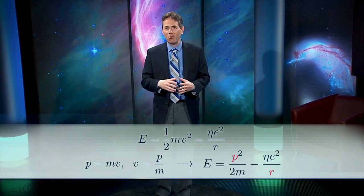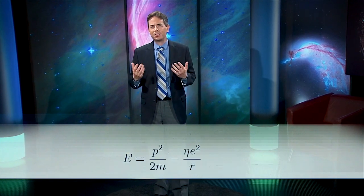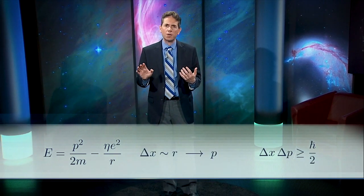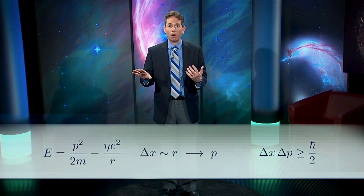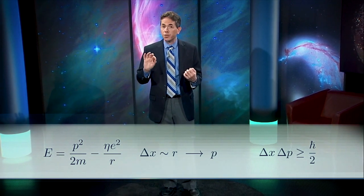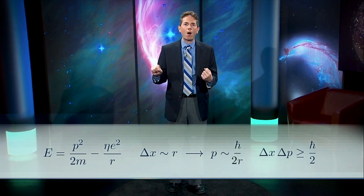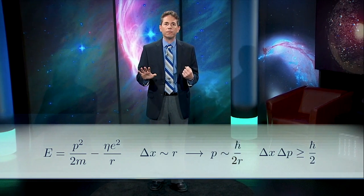Professor Heisenberg won't let us. If the cloud has a radius of r, the uncertainty in the electron's position is on the order of r, which means the uncertainty in its momentum can be no smaller than h-bar over 2 divided by r. So, if we shrink r too much, the momentum goes up, and the kinetic energy term grows out of control. But if we increase r too much, the potential energy rises, and it starts to dominate.